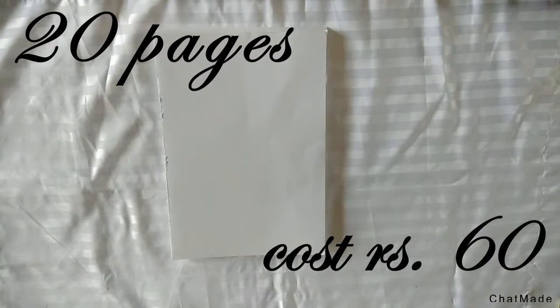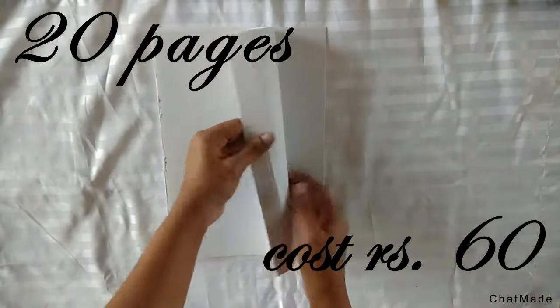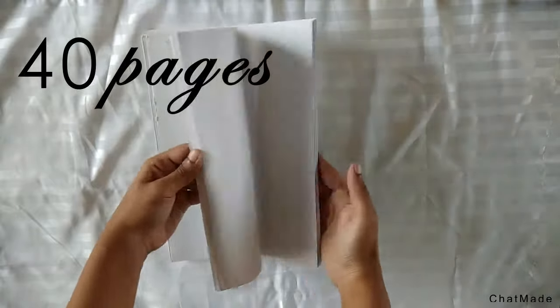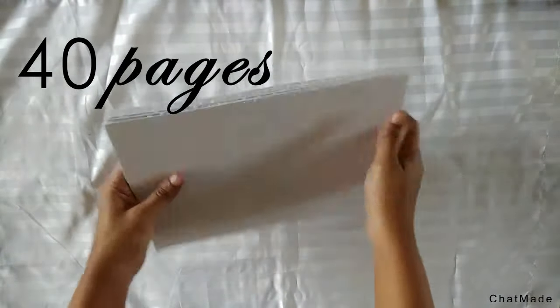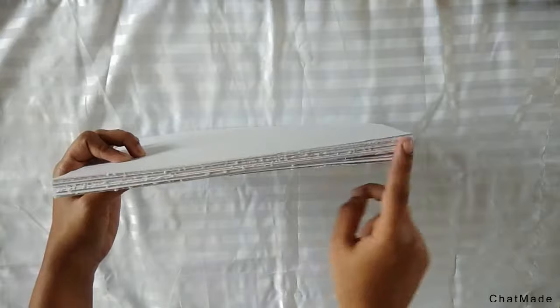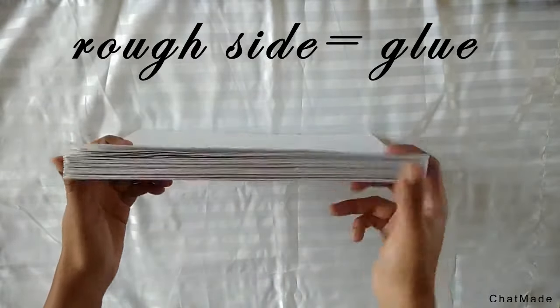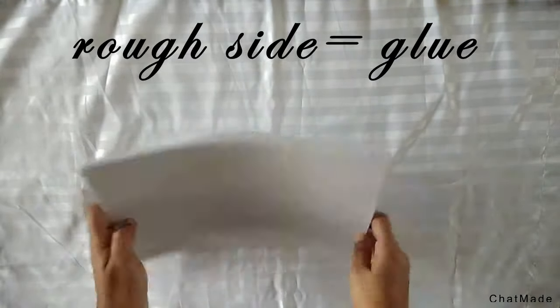I'm using 20 pages here. It cost me rupees 60 for 20 pages, so I'll be having 40 pages in total when I cut it into half. I've used a cutter that's why it has rough edge to one of the sides and smooth edge to the other.